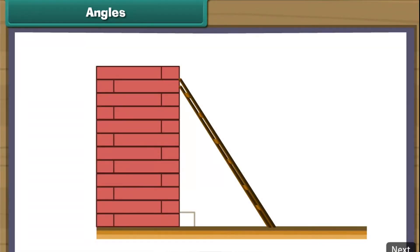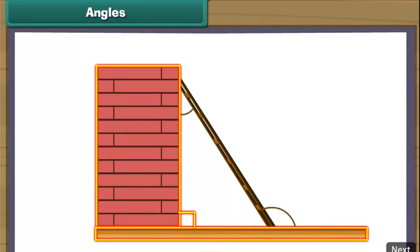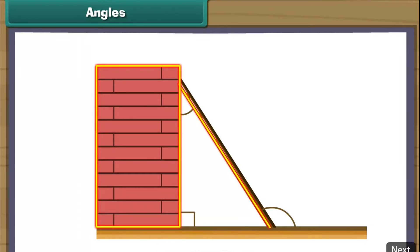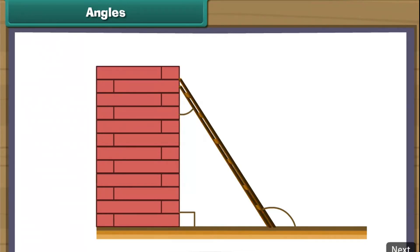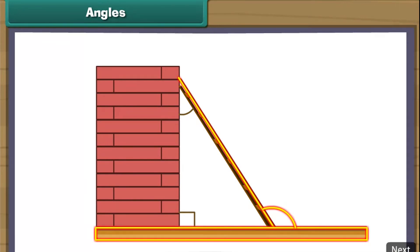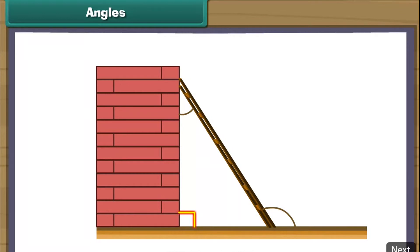Look at this scene. A ladder is standing against a wall. Let us look at three angles: the angle which the wall makes with the ground, the angle which the ladder makes with the wall, and the angle which the ladder makes with the ground. The ground acts as the base and the wall as the vertical line, forming a right angle.